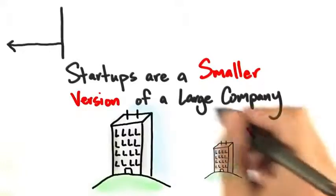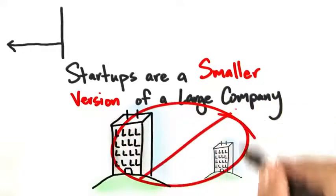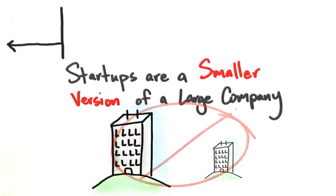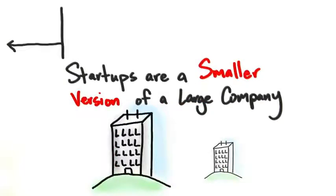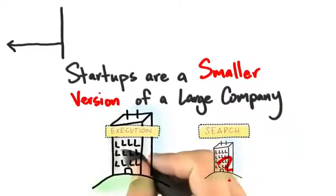What we now know is something very different. The difference, the core difference, is that startups do something called search while large companies spend their time, at least their core time, executing. And one of the questions we'll answer is search for what and execute what?